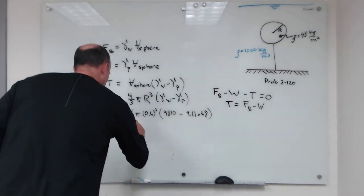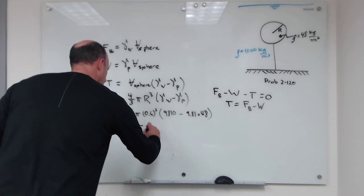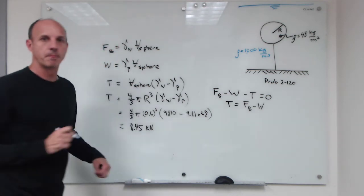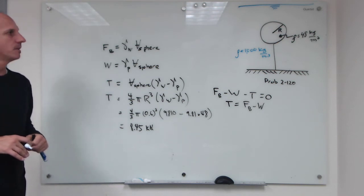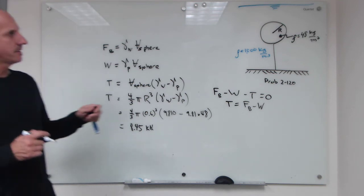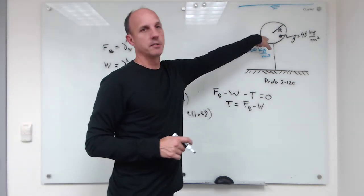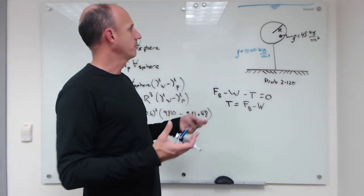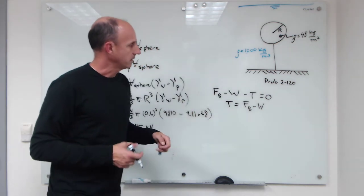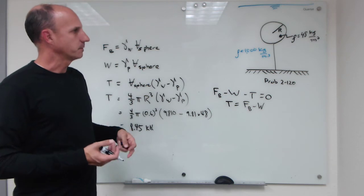Okay, that's basically a very simple buoyancy problem. And the key thing there is that you just need to know the volume of this object in order to understand how much liquid is displaced, and the buoyant force is based on the weight of the displaced fluid. That's Archimedes' principle.